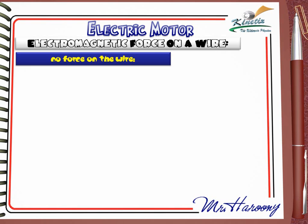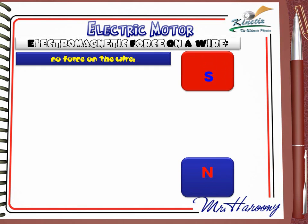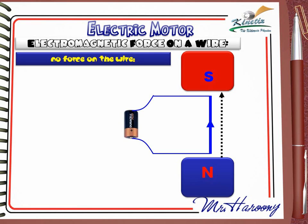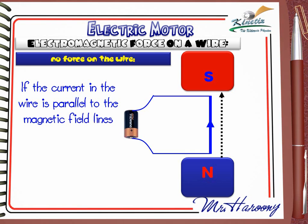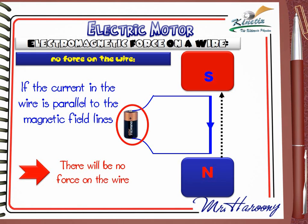Before ending, one last case must be discussed: a wire carrying electric current placed inside a magnetic field where no force is applied. The dotted black arrow shows the direction of the magnetic field, and it is clear that the current and the magnetic field are parallel to each other. In this case the wire will not move. If the current in the wire is parallel to the magnetic field lines, there will be no force on the wire — even if the current is reversed, the wire will not move, as the current and magnetic field remain parallel.